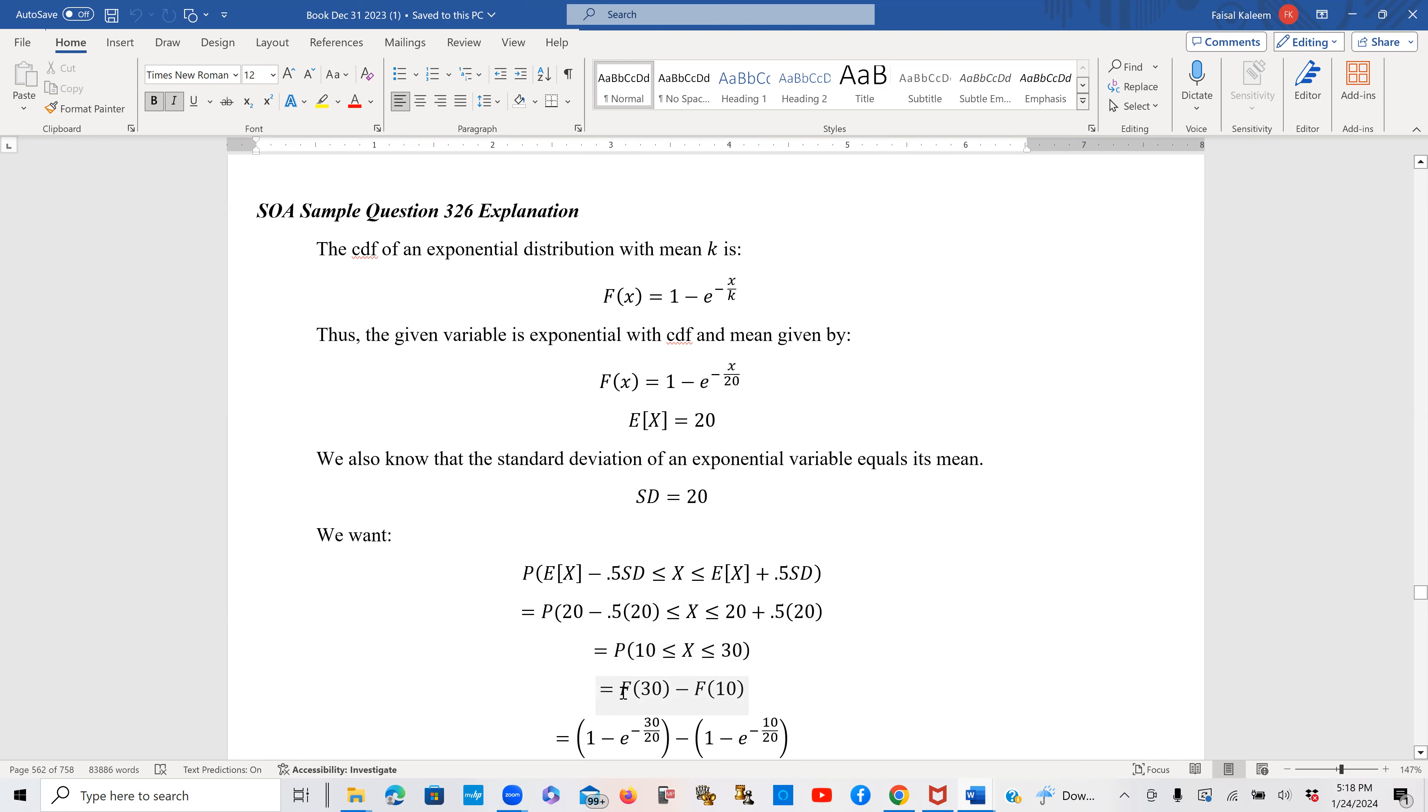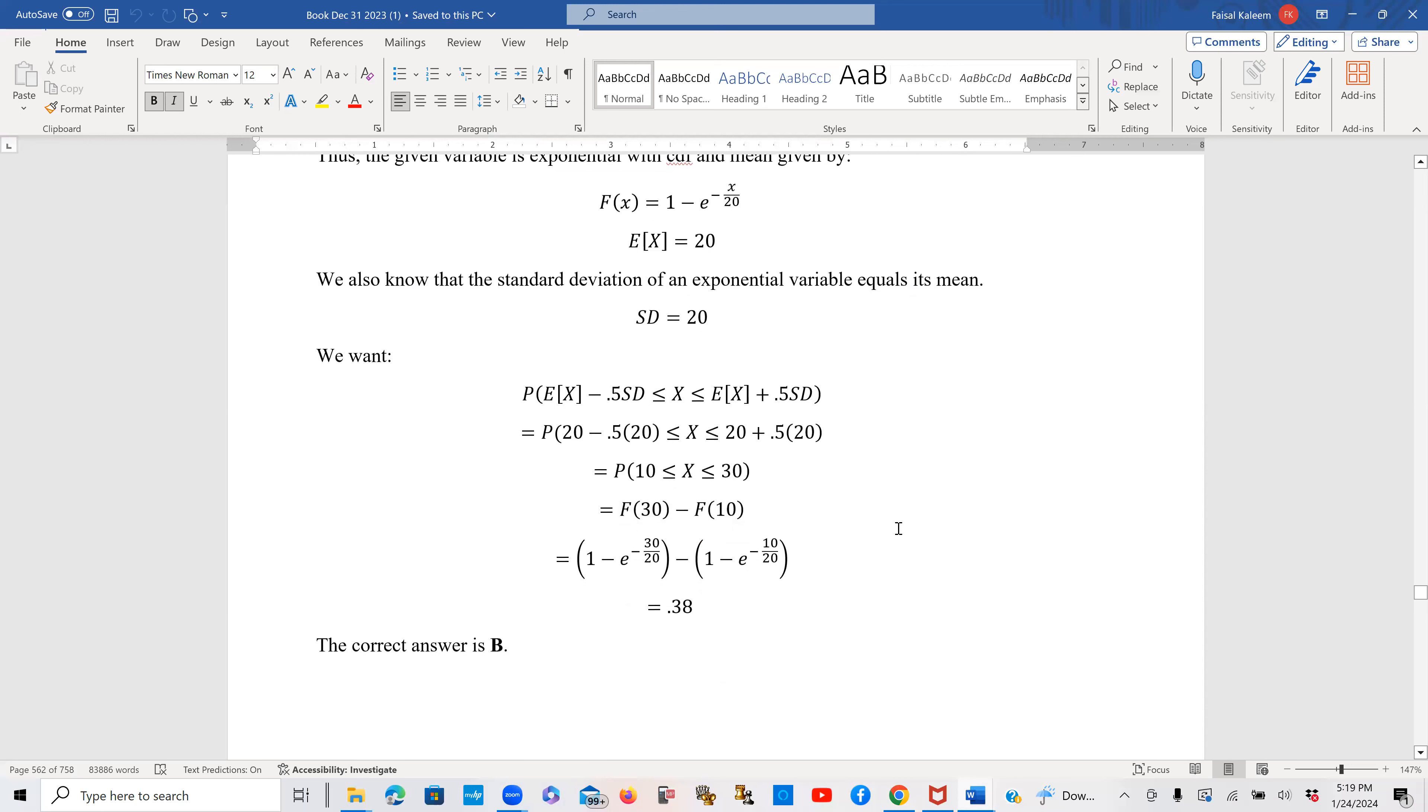So that is equal to the CDF at 30 minus CDF at 10. So we have the CDF as 1 minus e to the minus x by 20. So we first substitute x equals 30 in it and then x equals 10 in it. And this simplifies to 0.38. That is choice B.